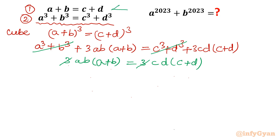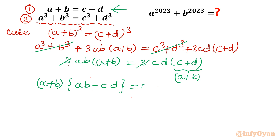Since from equation 1 we know a plus b equals c plus d, I substitute c plus d with a plus b on the right side and factor out (a plus b). This leaves us with (a plus b) times (ab minus cd) equals 0. By the zero-product property, either (a plus b) equals 0 or (ab minus cd) equals 0.